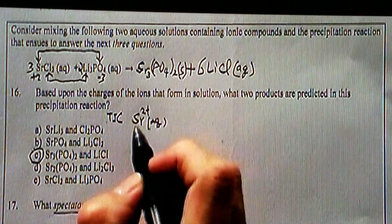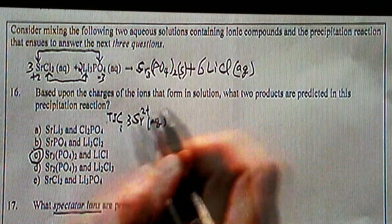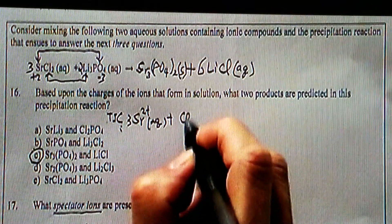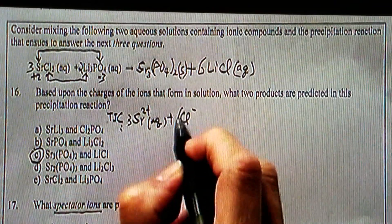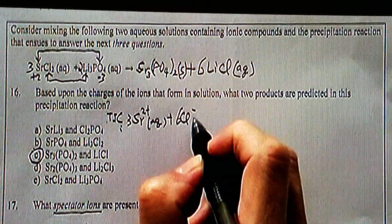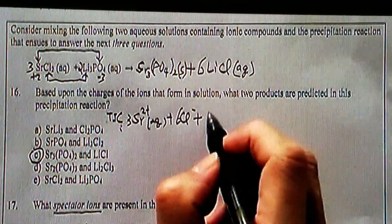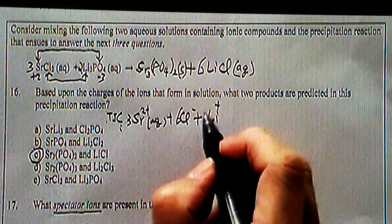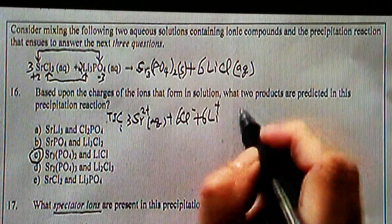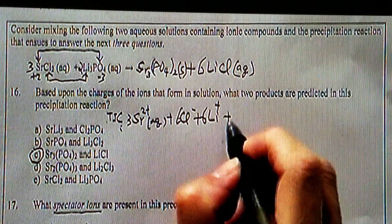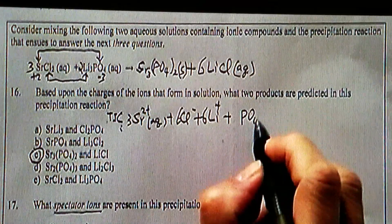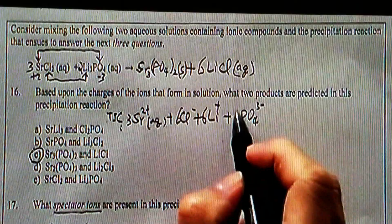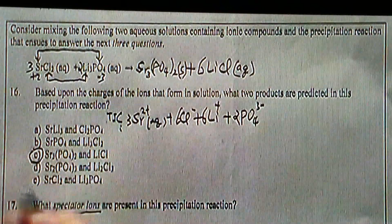We're going to take the total ionic equation. That's three Sr²⁺, and then chloride negative one, two times three, that's six. Plus lithium, always positive one, we have three times two, that's six. And then we have phosphate, always negative three, and we have two phosphates. That's on the reactant side.